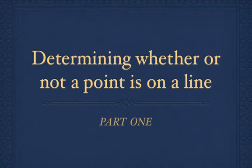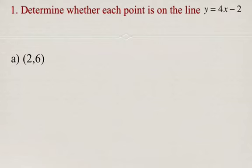Here's the first part of the lesson on determining whether or not a point is on a line. In this type of question, you're going to be asked to determine whether a coordinate lies on a particular line, and that means the coordinate has to satisfy the equation of the line.